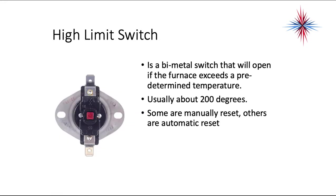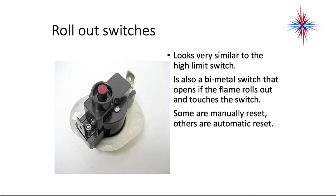If you look at these two switches they really look very identical to each other. The difference is going to be the placement. The high limit switch you're going to find on the top of the heat exchanger, on the top of the blower housing, and in other higher areas of the furnace. Some are hidden sometimes so you have to use your meter to try to find where the open is in the circuit. The rollout switch is always going to be in front of the burner compartment, someplace on the burner side of things. The purpose of the rollout switch is that if the flame goes the wrong direction — if for some reason the vent stack is plugged or if there's something plugged in the heat exchanger — the flame will come out into the wiring compartment rather than go into the burners.